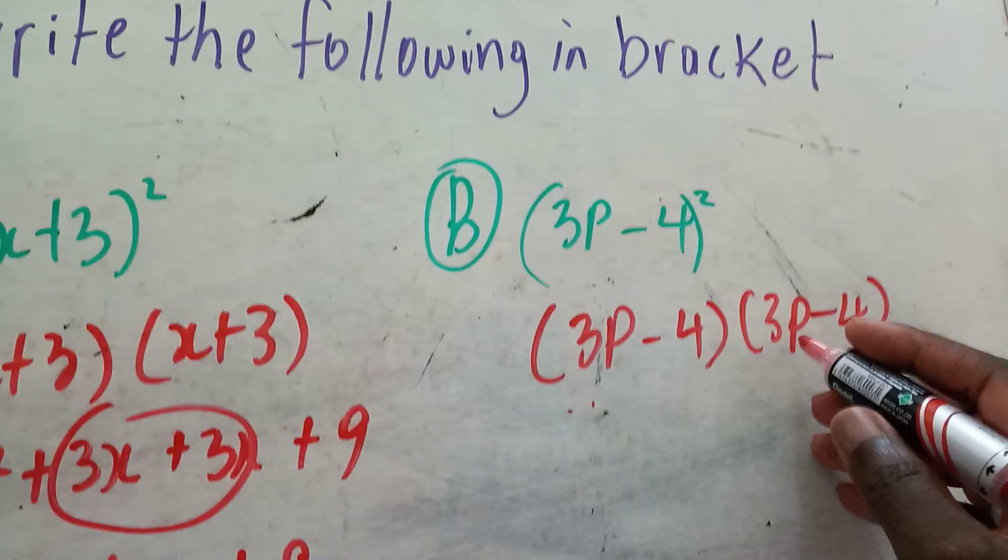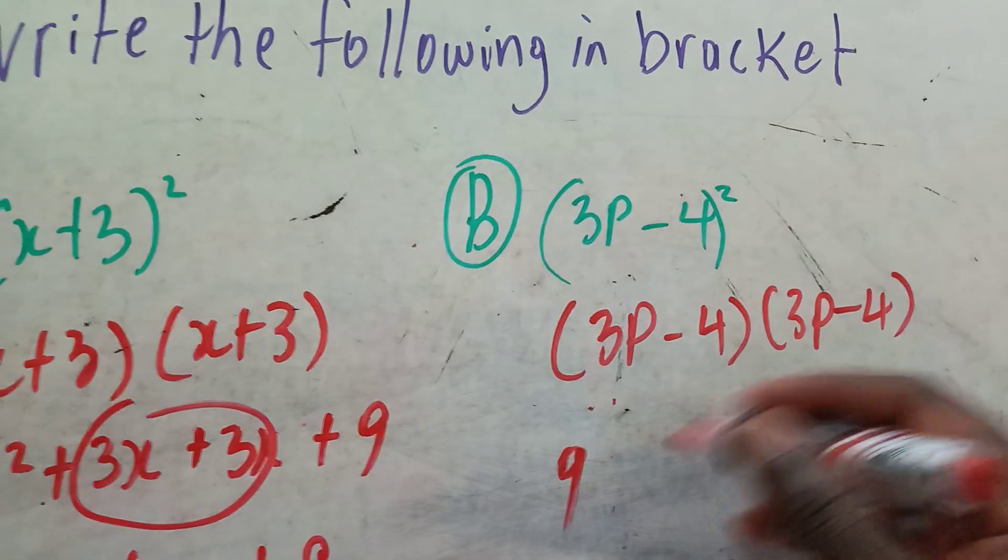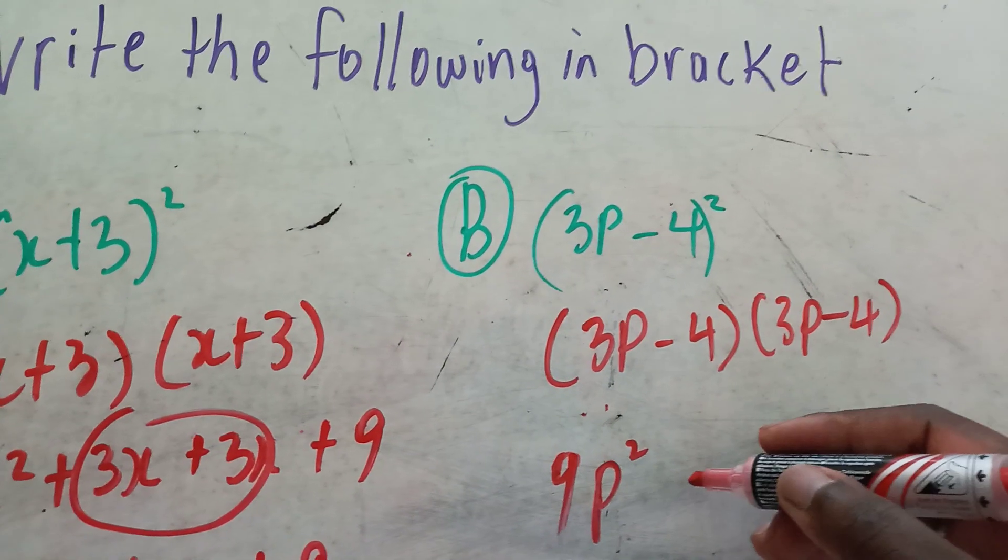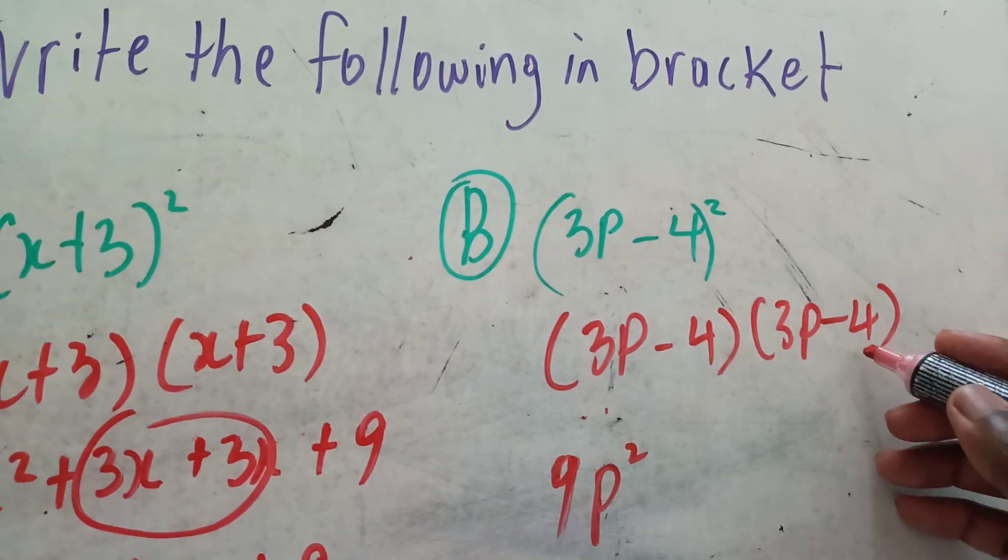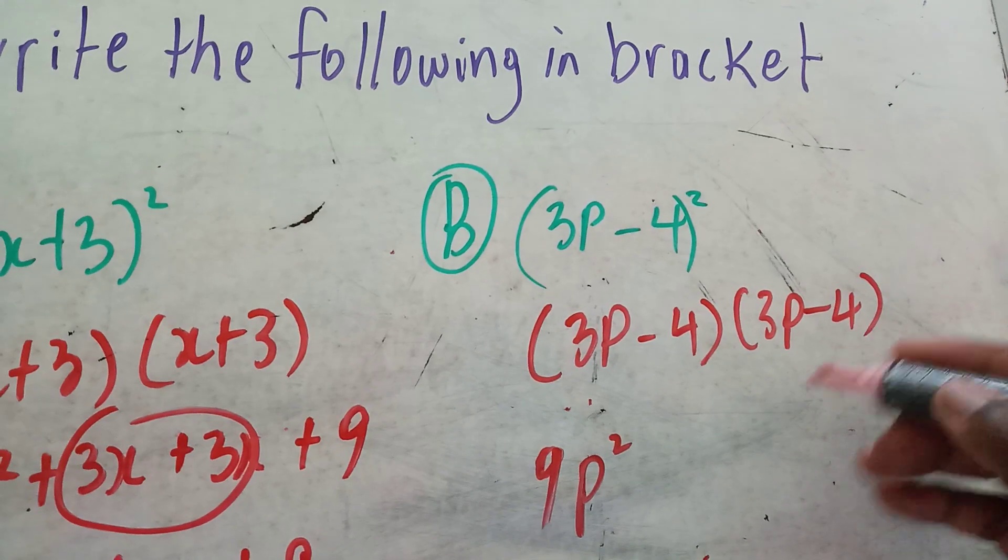Okay, 3p times 3p: 3 times 3 equals 9p². 3p times -4 is going to give us -12p.